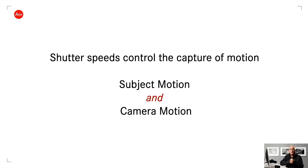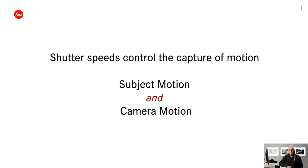There are two sorts of motion to be concerned about. The first is the obvious one: subject movement. The second is less obvious but absolutely critical: camera motion. The camera is not stable when you're hand-holding it. One of the biggest rookie errors I see when teaching beginners is blurred photographs not due to subject movement but because the camera was wobbling.